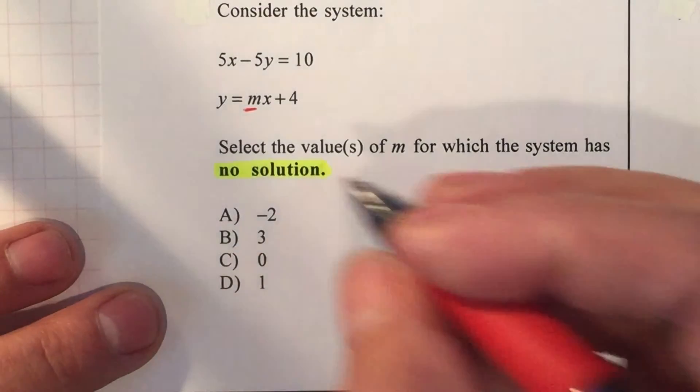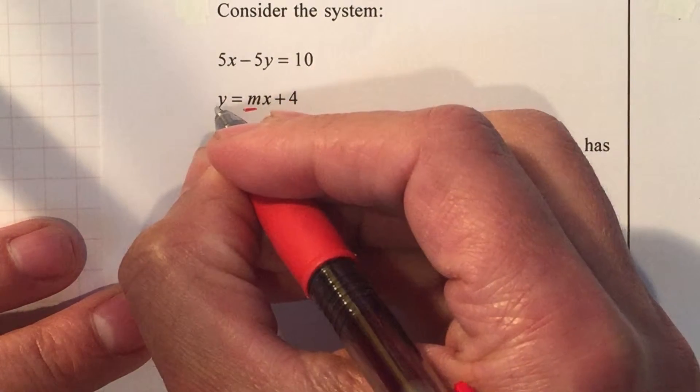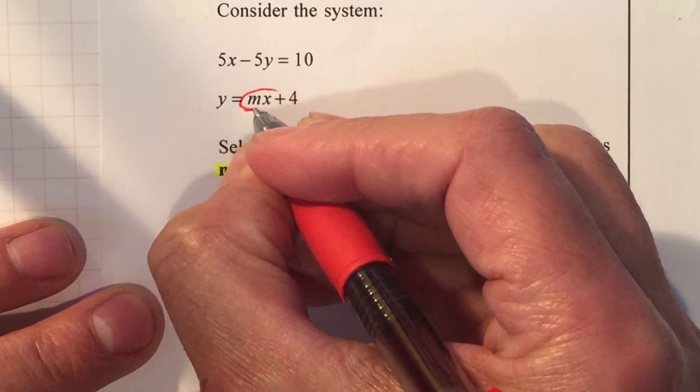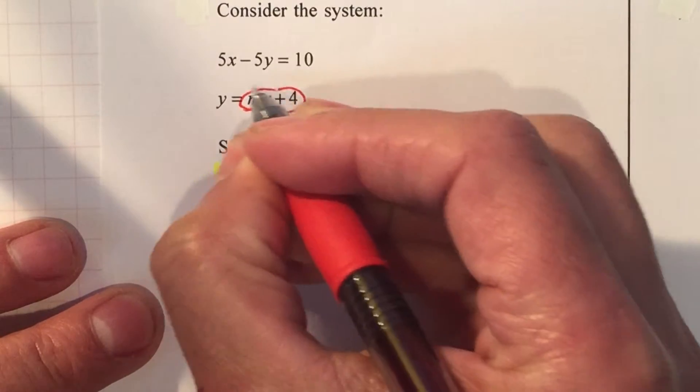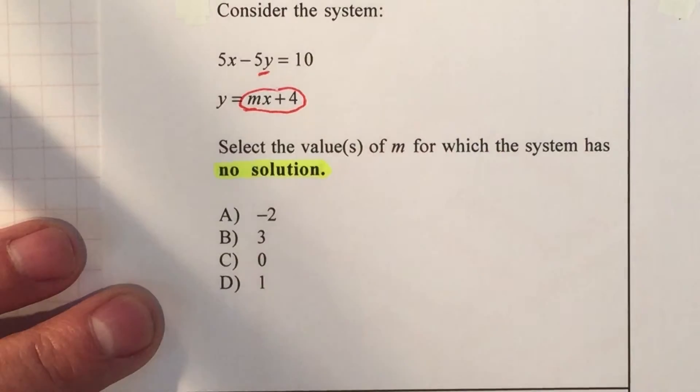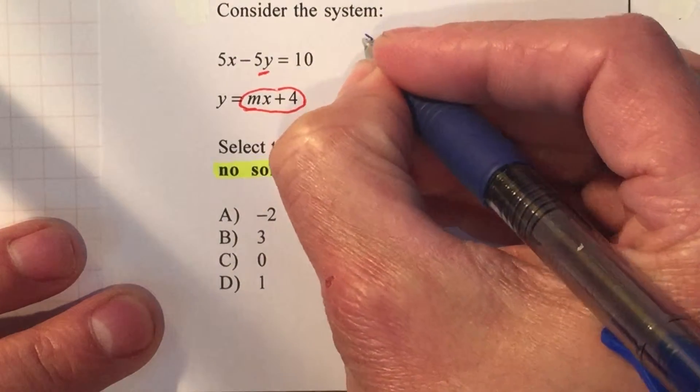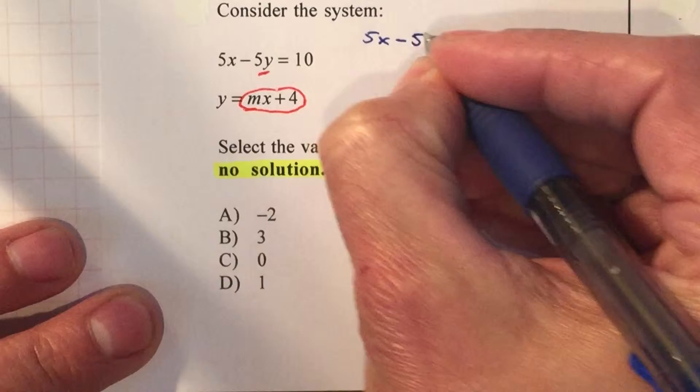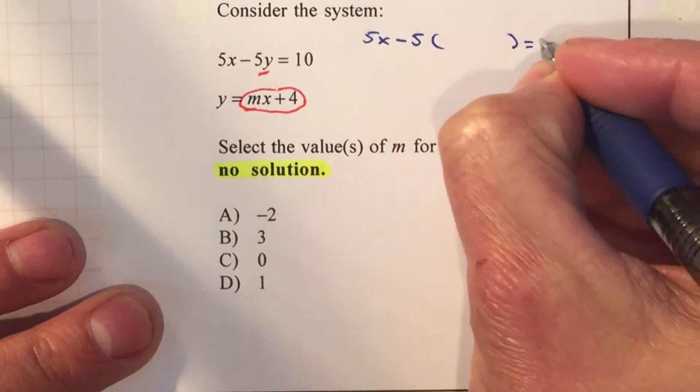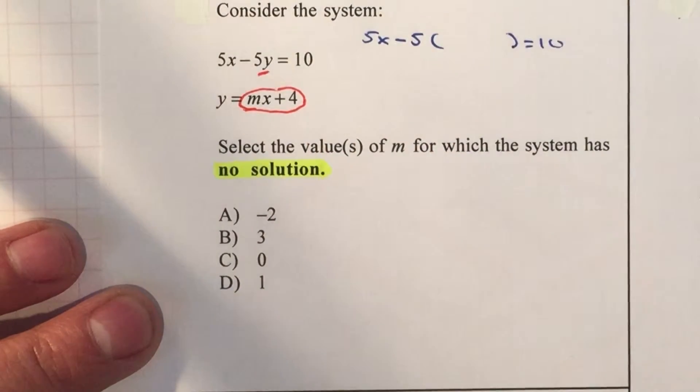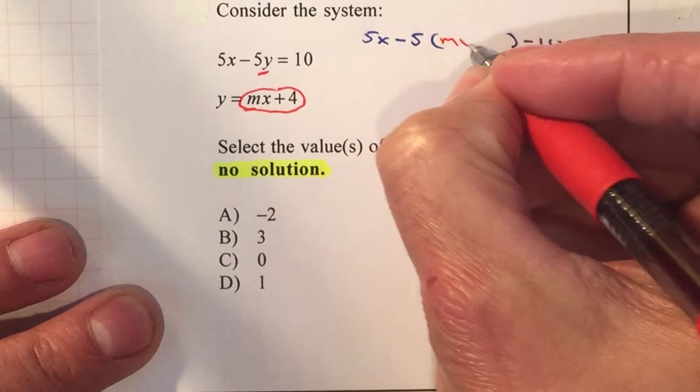Another way is to just do it by substitution. Since this is y equals, I'm gonna plug this mx plus 4 instead of the y. So we have 5x minus 5, instead of the y I'm gonna replace it with mx plus 4.